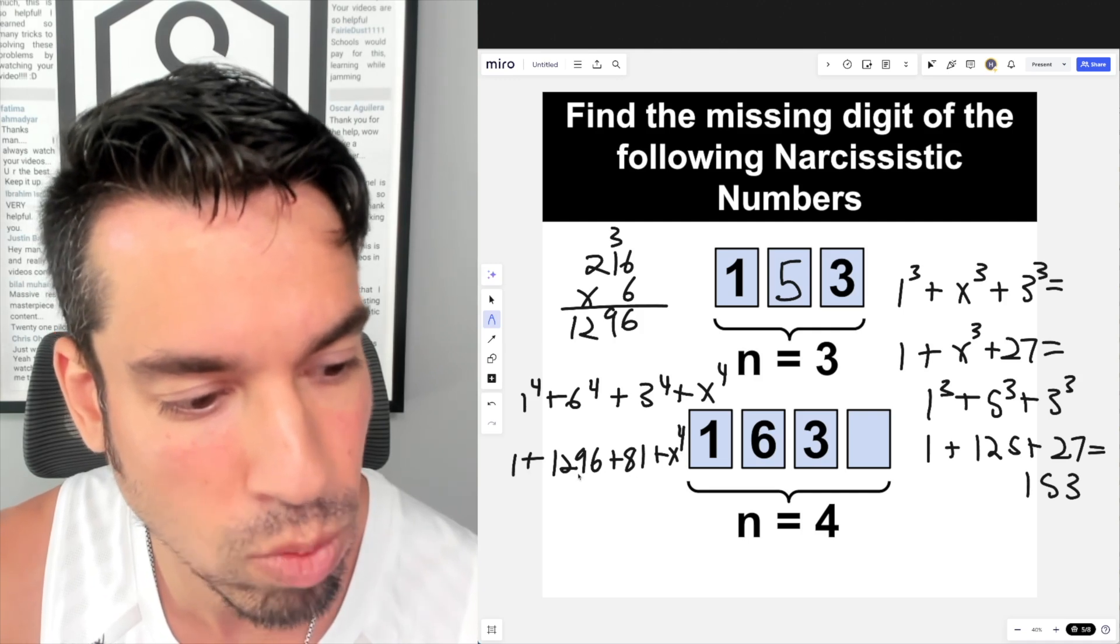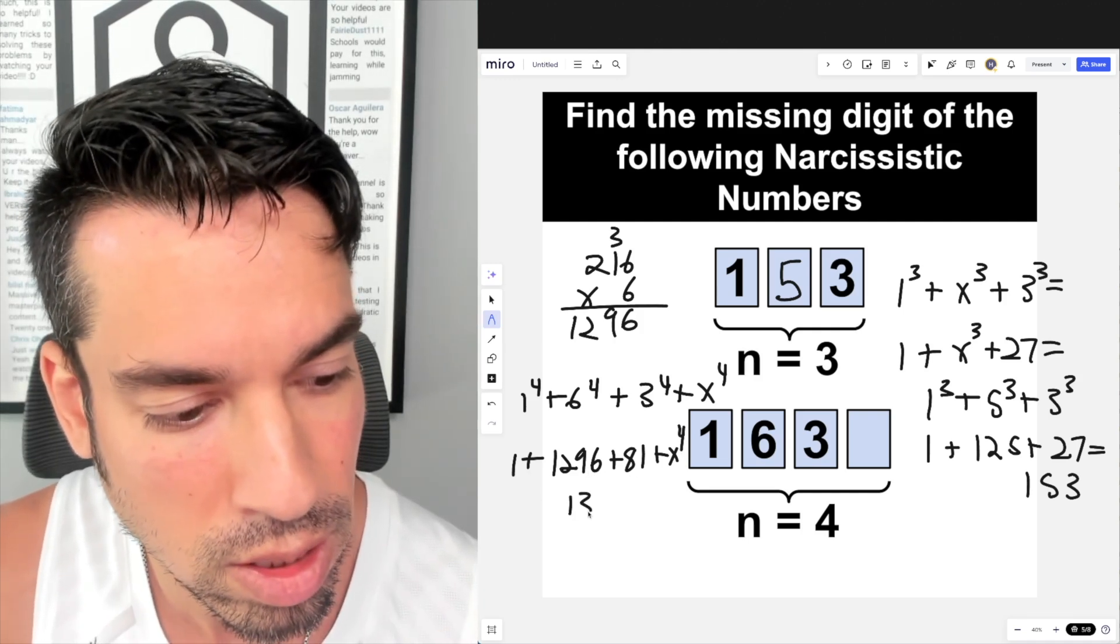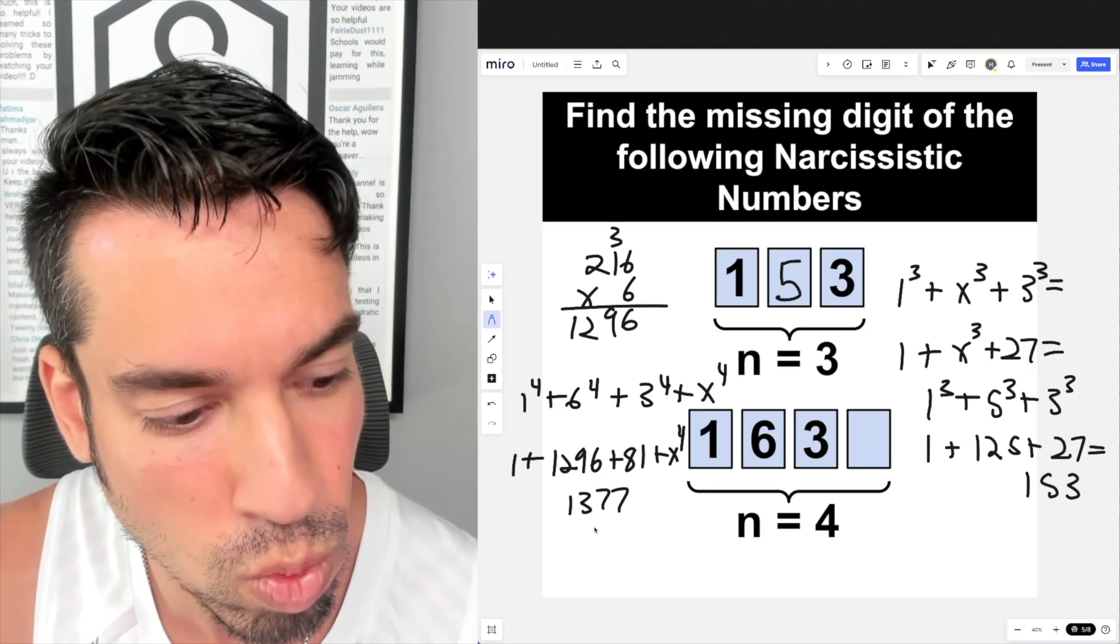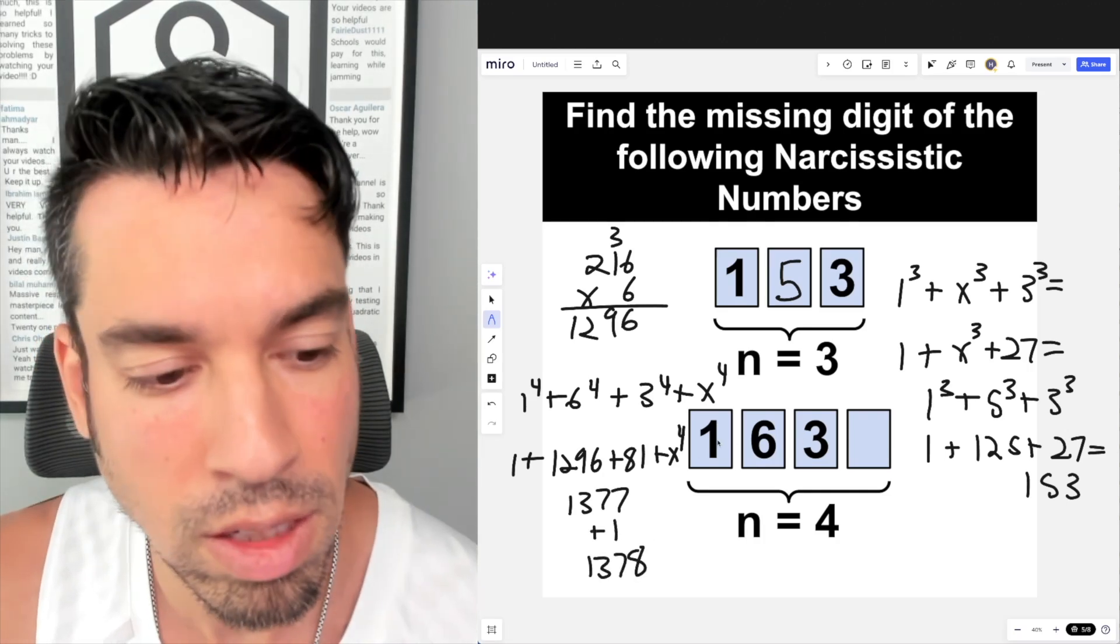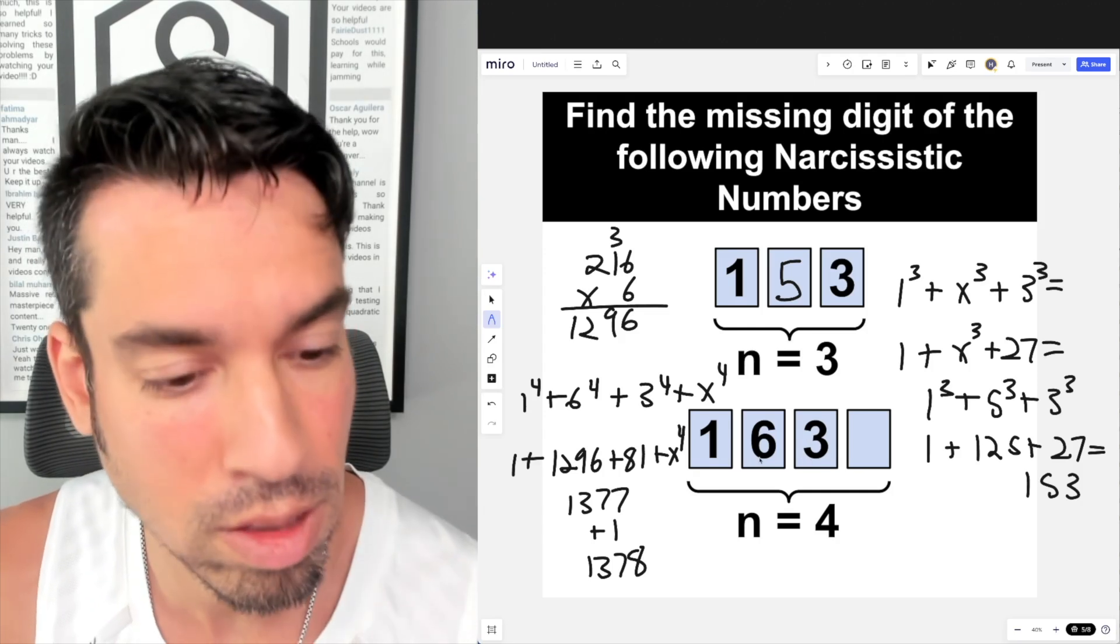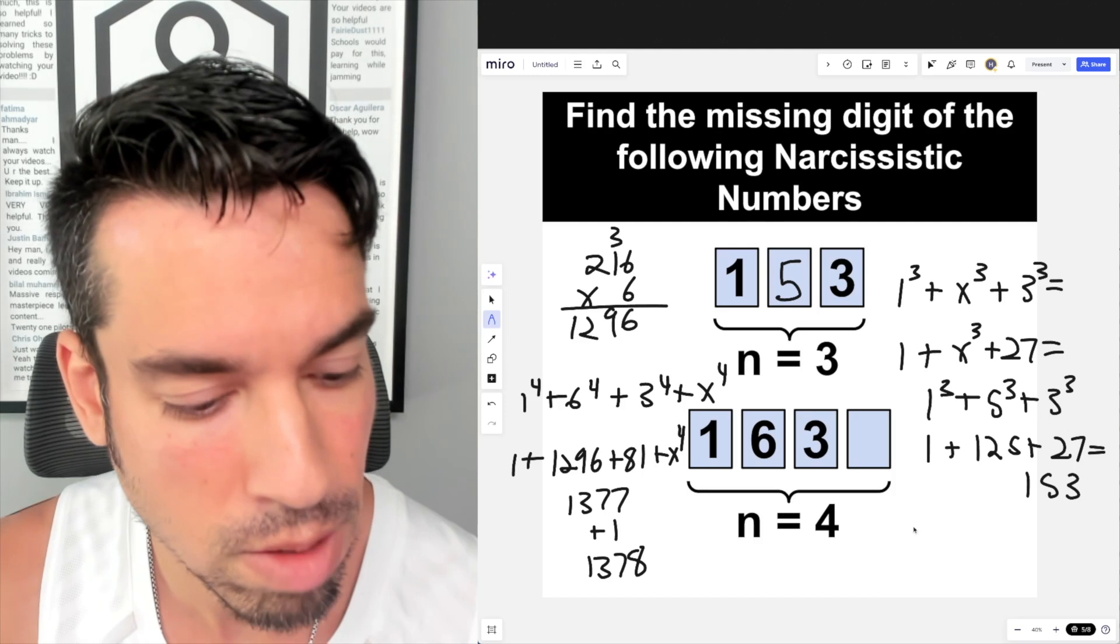Let's add this up first. So we got 81 plus 1296: 1297, 1377, plus 1 is 1378. Since this is 1630-something, we know we're missing around 200 and something.